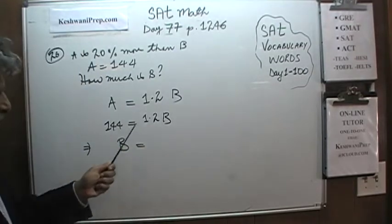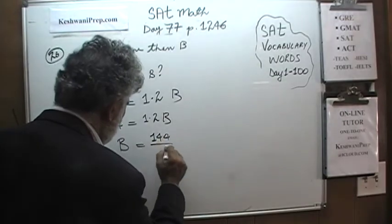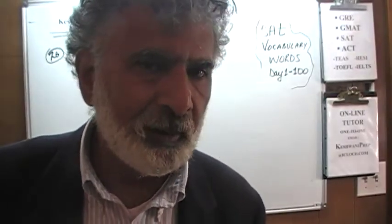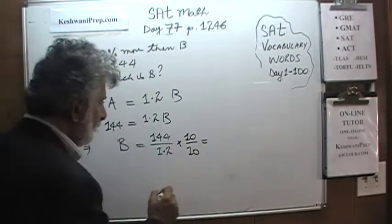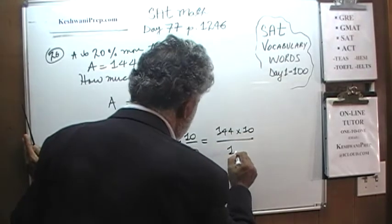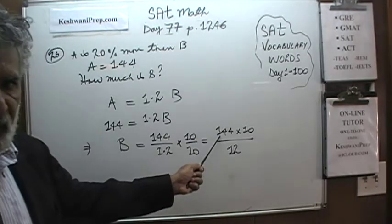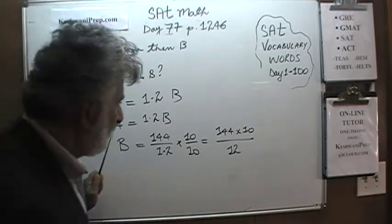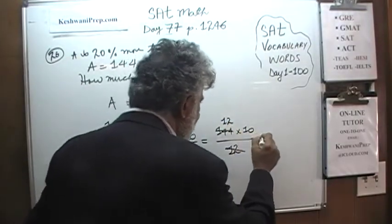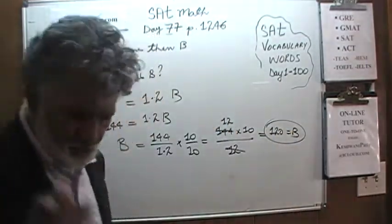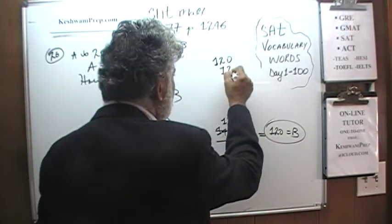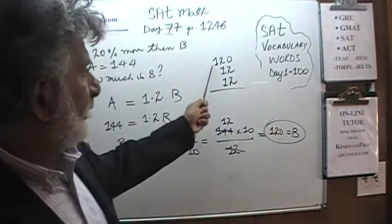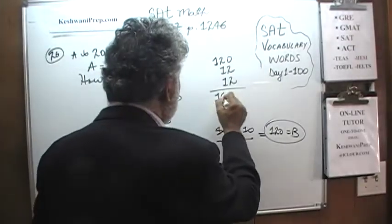This implies B = 144/1.2. I detest dealing with decimals, so we multiply top and bottom by 10 to get 1440/12. Since 144 = 12², dividing top and bottom by 12 gives 12 × 10 = 120. So B = 120. This makes sense: 120 increased by 20% means adding 24 (20% of 120), giving 144.